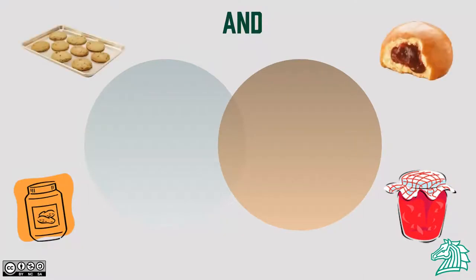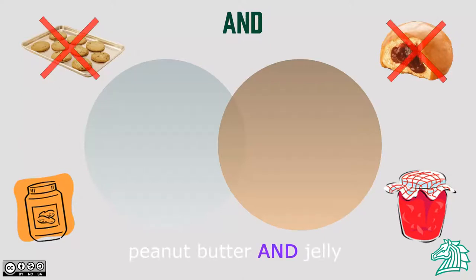Without the AND operator, our search would turn up results for peanut butter cookies or jelly donuts. We don't want this information, but once we stick AND between these two phrases, our search will include only resources that mention both combined phrases, like peanut butter and jelly sandwiches.